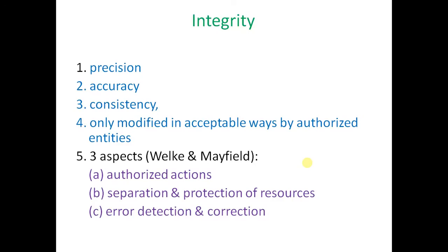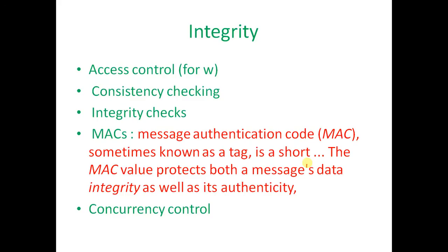Integrity refers to precision, accuracy, and consistency — data may only be modified in an acceptable manner by authorized entities. There are three aspects: authorized action, separation, and error detection. Integrity mechanisms include access control, consistency checking, integrity checks, and Message Authentication Code (MAC). A MAC, sometimes known as a tag, is a short value that protects both a message's data integrity as well as its authenticity.